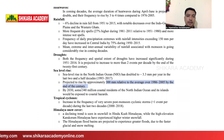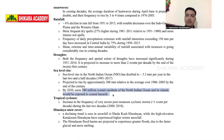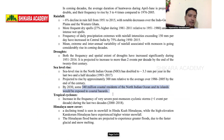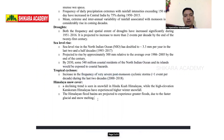In the coming decades, agriculture will be heavily impacted by droughts — the frequency and spatial extent of droughts will be a big challenge for the agriculture sector in India. Sea level rise in the North Indian Ocean has doubled to approximately 3.3 millimetres per year over the last two and a half decades. Cyclone frequency of very severe post-monsoon cyclone storms is also increasing. A declining trend is seen in snowfall in the Hindu Kush Himalayas.